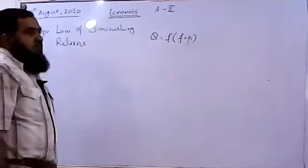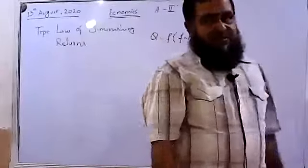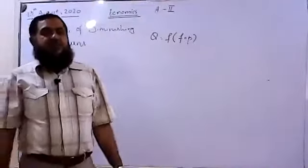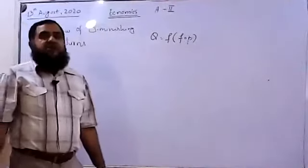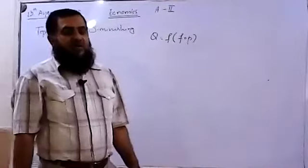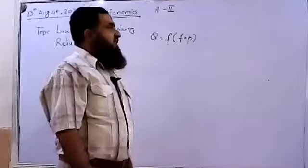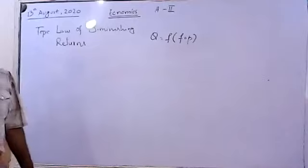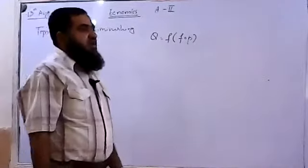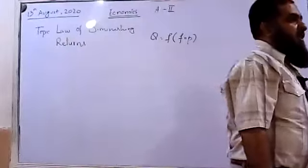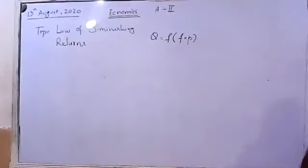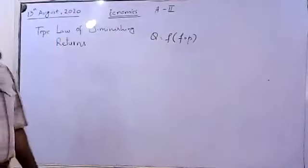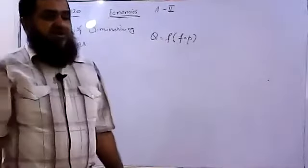We also explained things like the short-run production function and long-run production function. In the case of the short-run production function, we discussed that at least one factor of production is kept fixed and others are going to be variable factors. Whereas in the long run, all the factors of production are going to be variable — nothing is kept fixed. When the firm is able to vary all its factors of production, it is in the long run. When it has at least one fixed factor, it is in the short run.